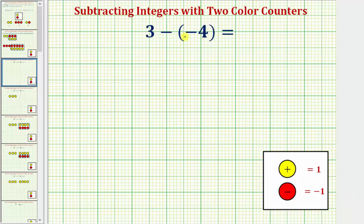Welcome to an example in which we'll use two colored counters to explain why subtracting a negative is equivalent to adding a positive. For review, we use a yellow counter for positive one and a red counter for negative one. Notice how one yellow and one red counter would be equal to zero.